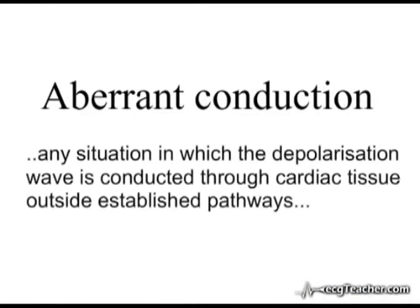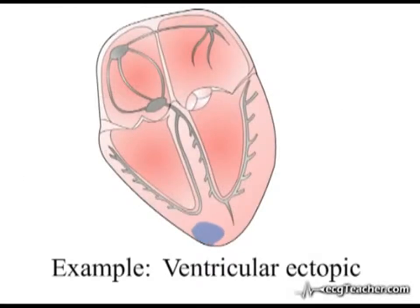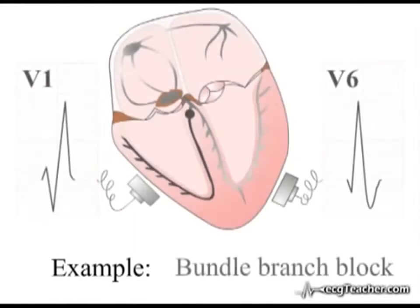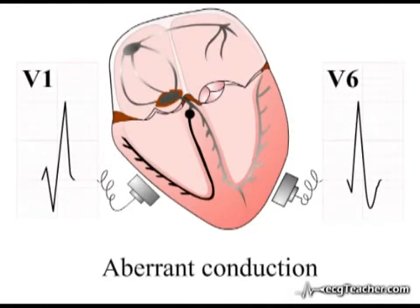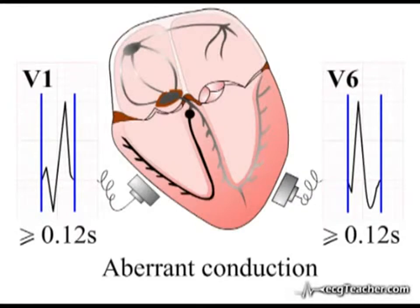The terms aberrancy or aberrant conduction refer to any situation in which a depolarisation wave is conducted through cardiac tissue outside established pathways. Examples of aberrancy within the ventricles include conduction of ventricular ectopics and conduction of ventricular depolarisation in the presence of a bundle branch block. In these situations, aberrant conduction results in altered QRS complex morphology, with widening of the complexes beyond the upper limit of normal duration as the depolarisation wave spreads slowly by direct cell-to-cell contact outside the conducting system.